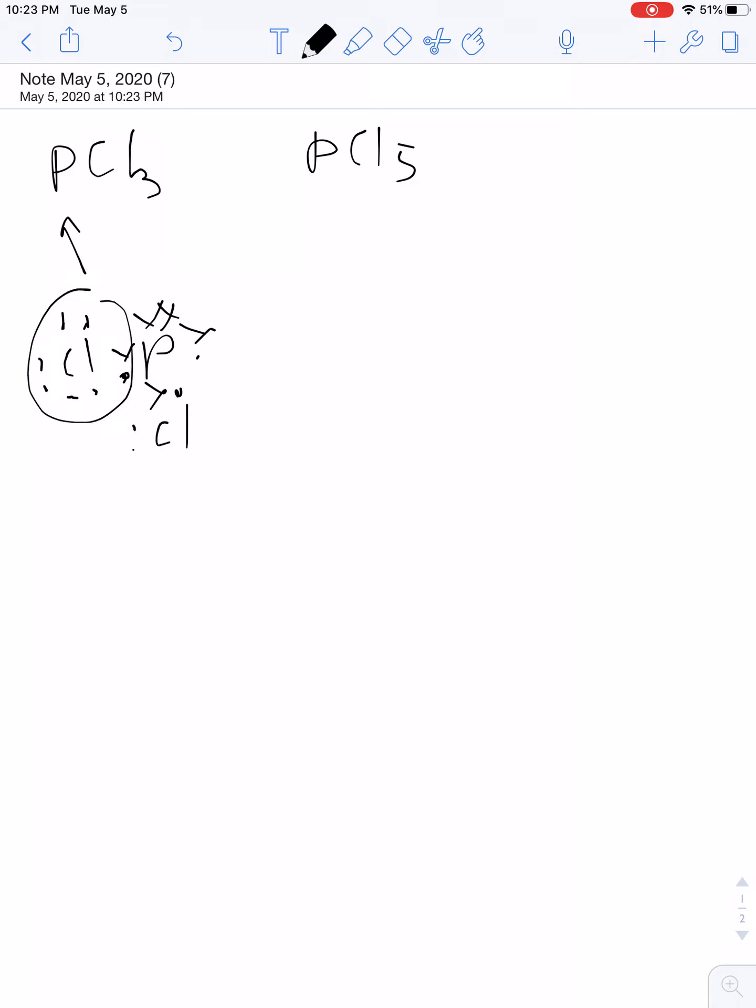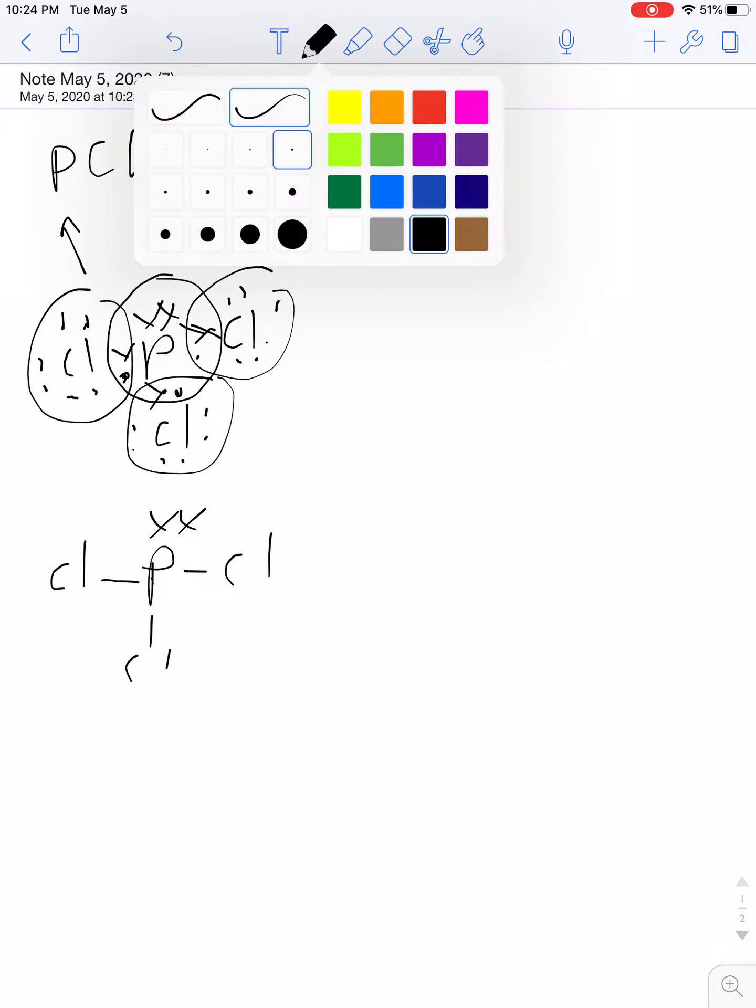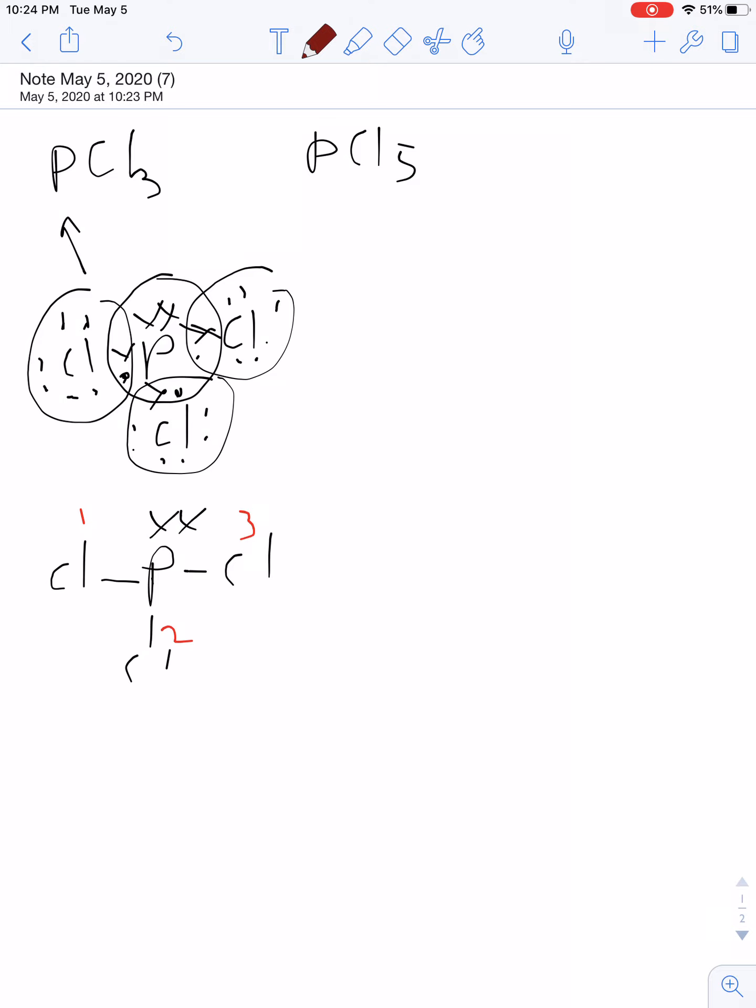8 there, 8 there, 8 there, and 8 there. So here's my phosphorus bonded to 3 chlorines, and there you go. And I would count up the number of things that are attached. So I've got 1, 2, 3, 4 things attached. So my hybridization on my phosphorus would be sp3.